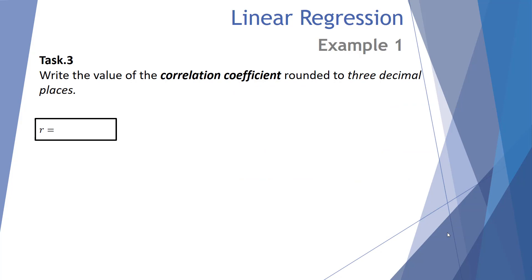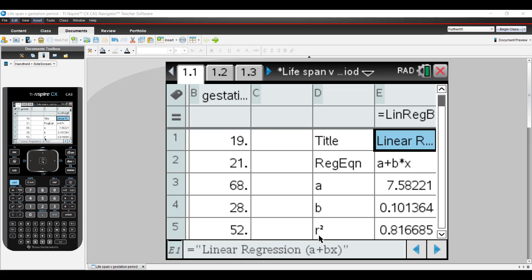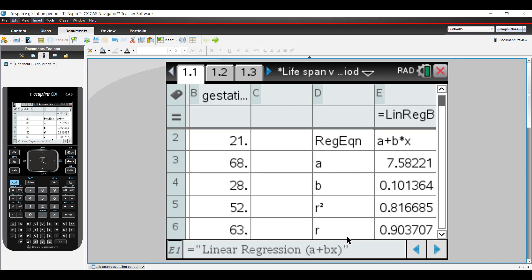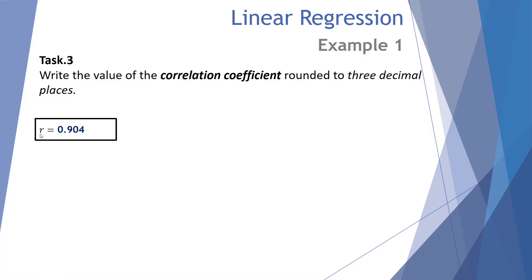Number three: write the value of the correlation coefficient rounded to three decimal places. r is the correlation coefficient. Going back to the TI-Inspire, the linear regression output shows the r value — the correlation coefficient — is 0.903707, which rounds to 0.904. So r equals 0.904 to three decimal places.